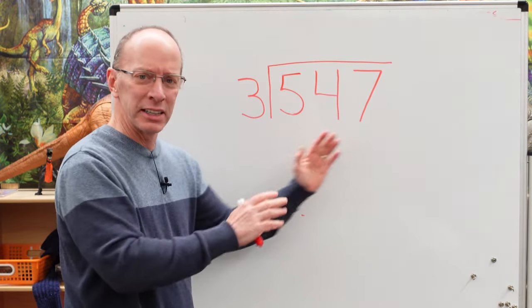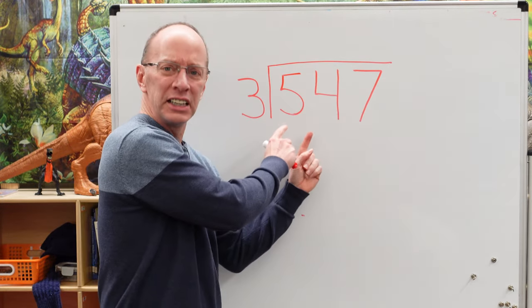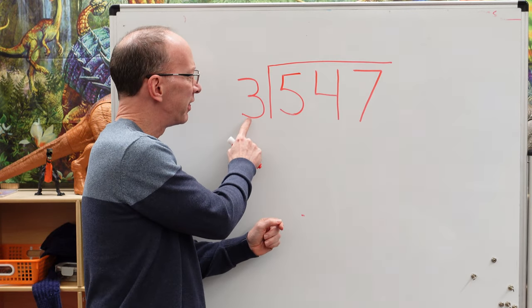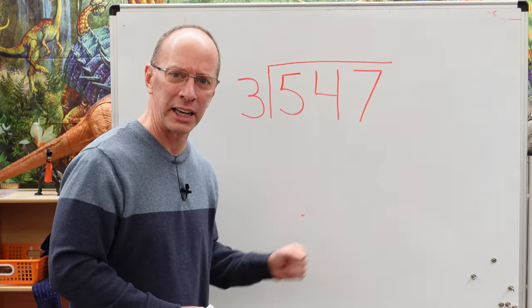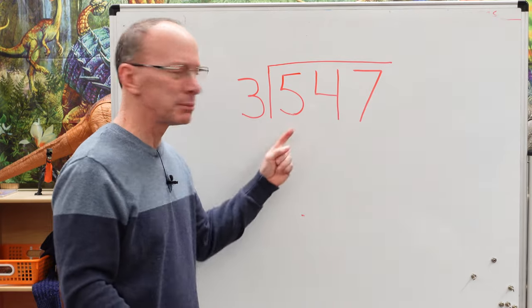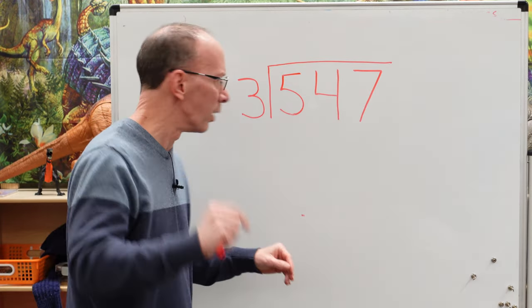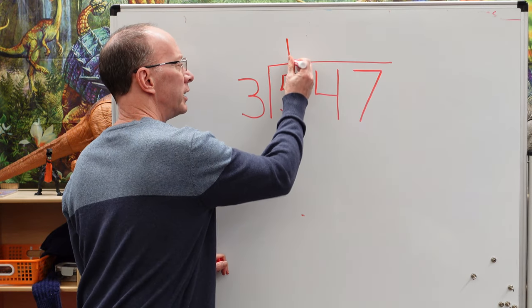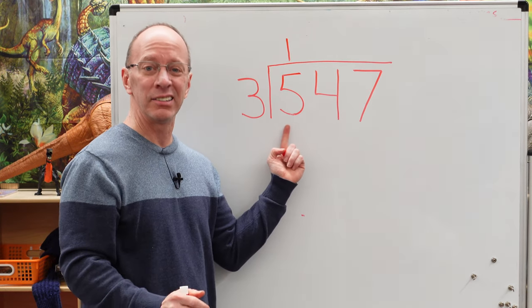First of all, when you see a big number like that, don't worry. Cover this part up and work with each number at a time. We've got to figure out how many times can I take this number right here and put it into that number. So I use our multiplication facts.